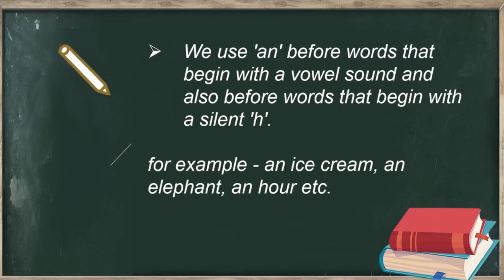Look at the examples. An ice cream. An elephant — 'e' is a vowel sound, so we have used 'an.' An hour — it starts with 'h' but we don't say 'havar,' we say 'aar.' 'A' is a vowel sound, that is why we used 'an' before it.